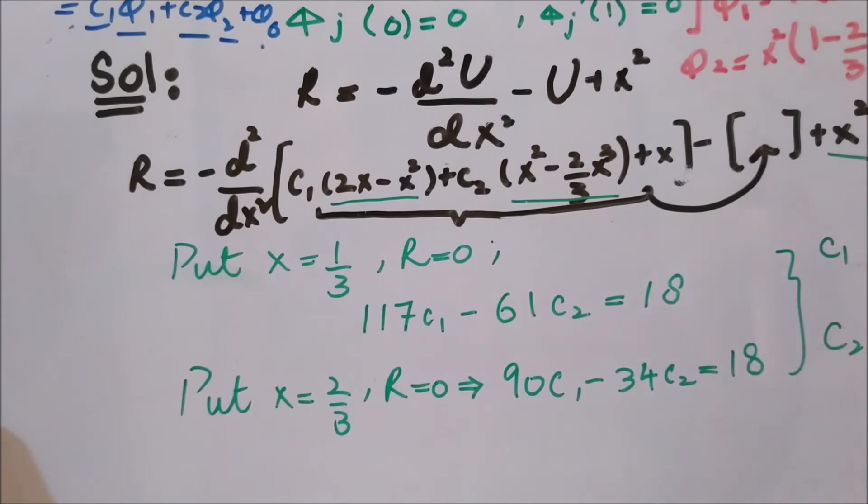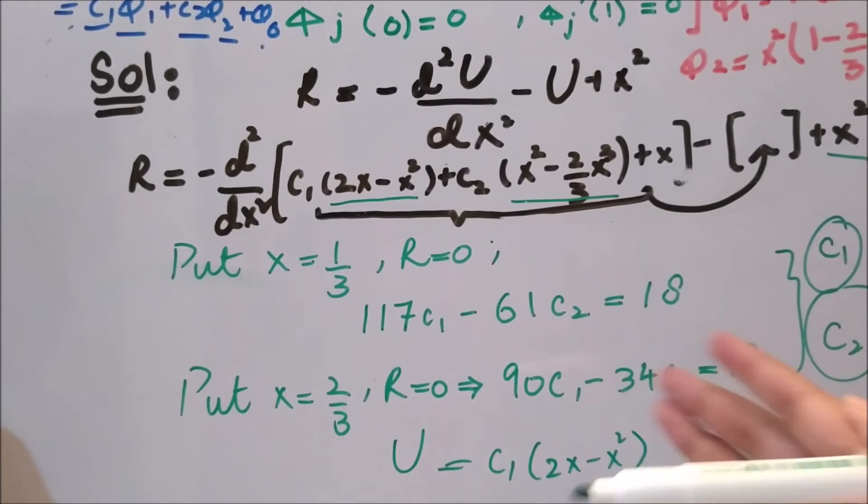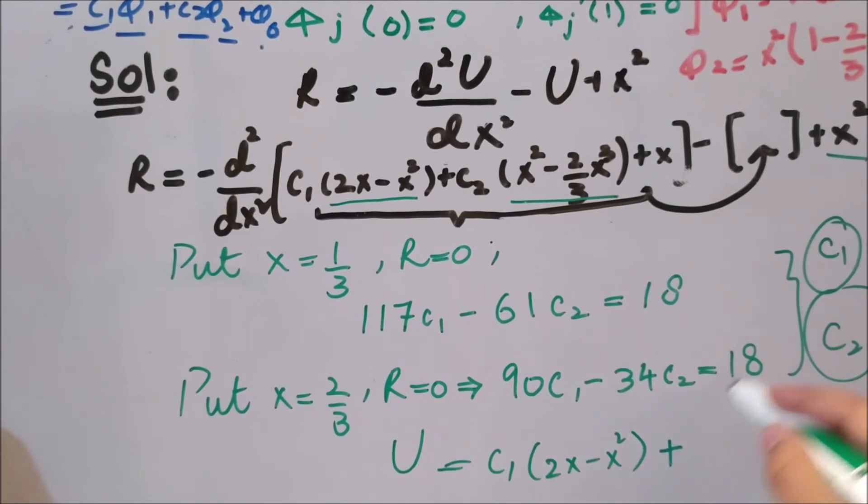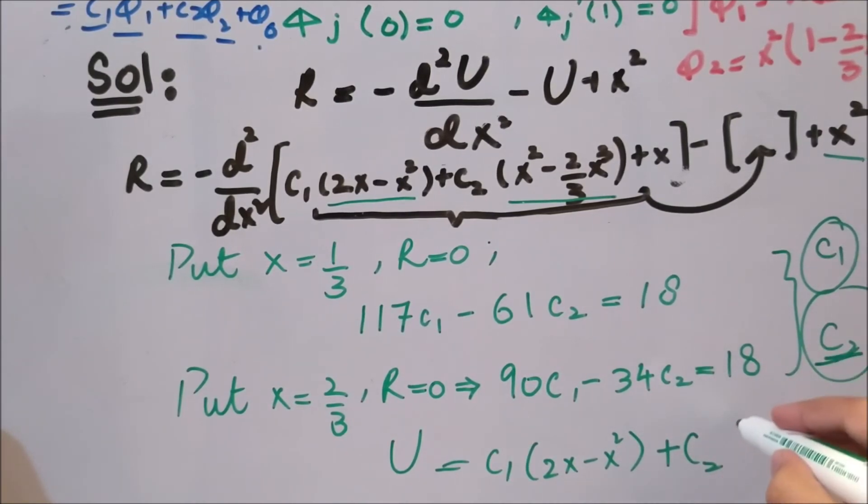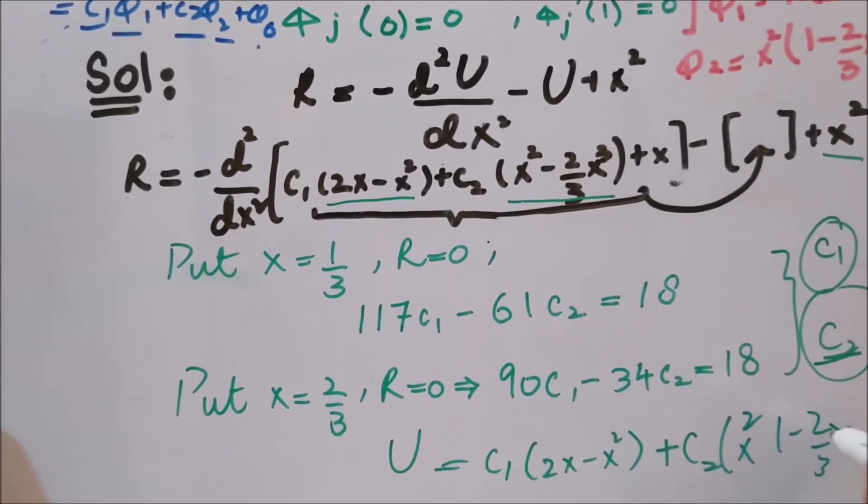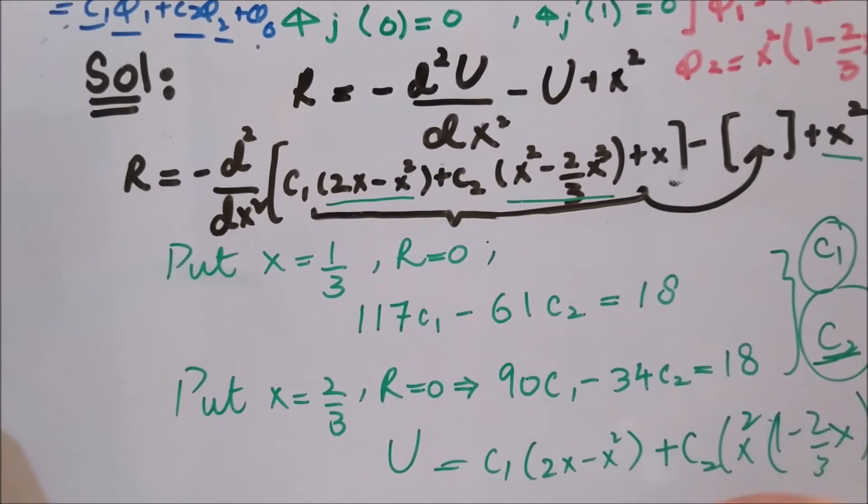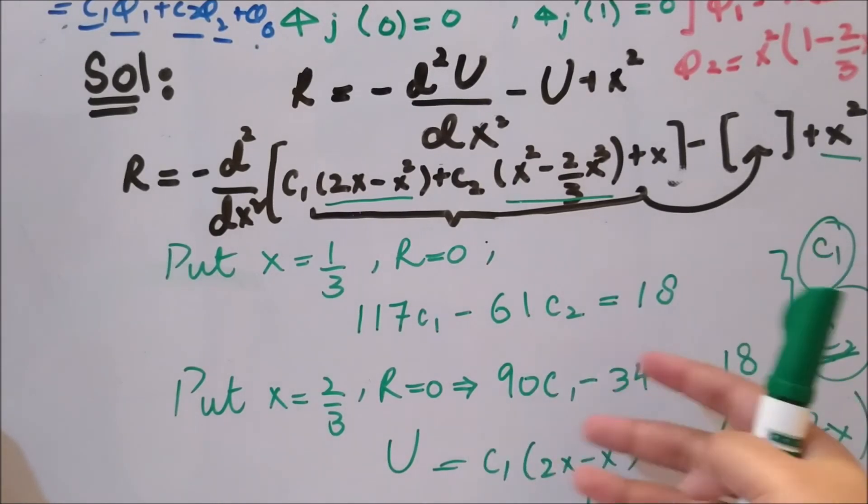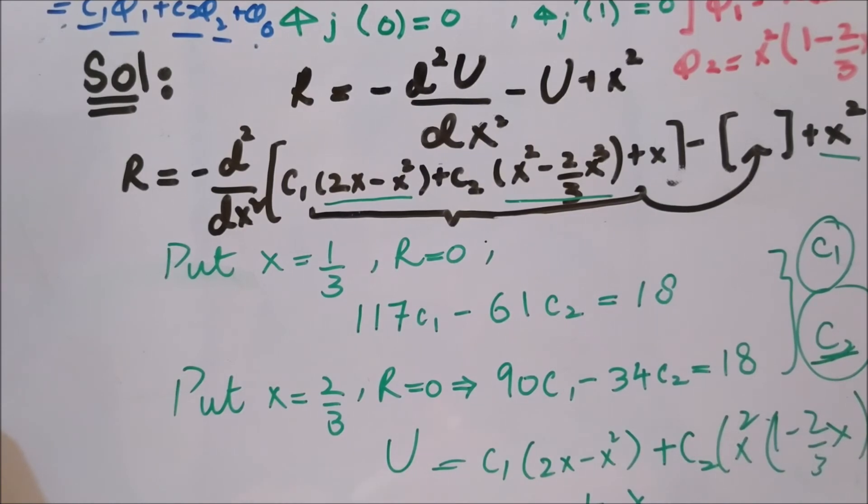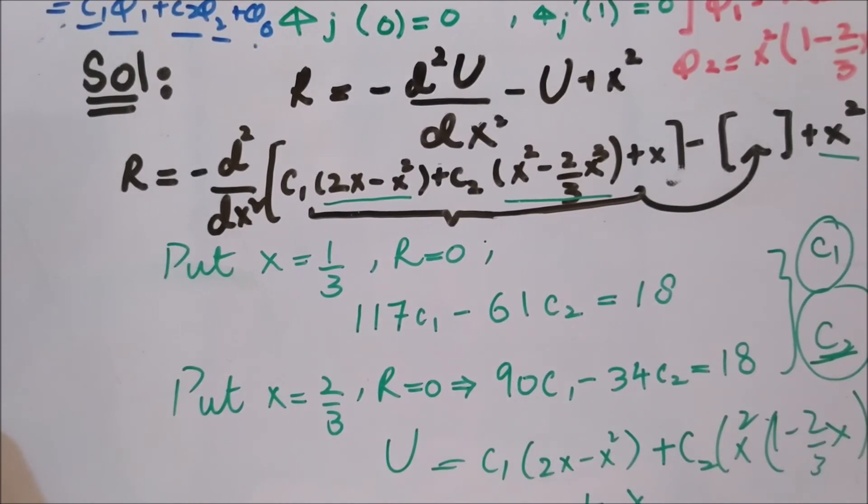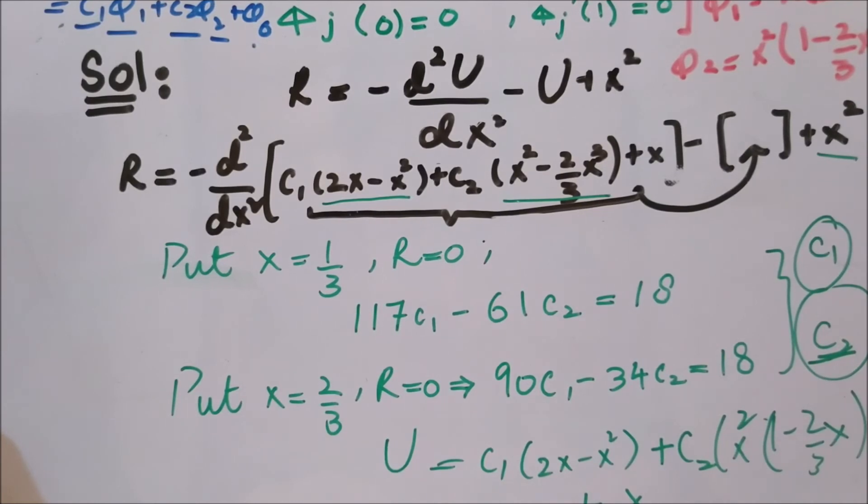By solving for c1 and c2 and plugging those values in—c1 here with phi1 that was 2x minus x squared or x into 2 minus x, plus c2 value with phi2, x times 1 minus 2 by 3x, plus phi0 that is x—you can simplify this again in order to see the compact form of the approximated U in this case. So now this is the fourth method to solve the strong form in a certain situation.